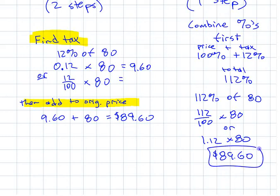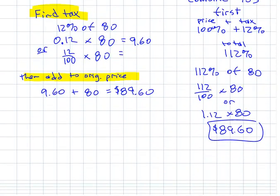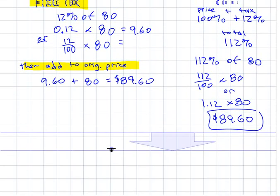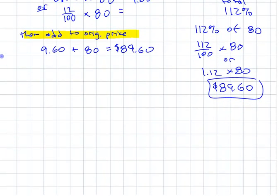112% - you can either go 112 divided by 100 times 80, or you can do 1.12 times 80, whichever you're more comfortable with. And then you'll get the answer right away, 89.60. I know that it looks like I did more writing over here than I did over there, but it's only because we're doing all the explanation. You can jump right to this, and that's your one single step that you're going to do.